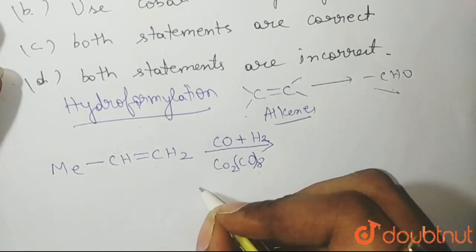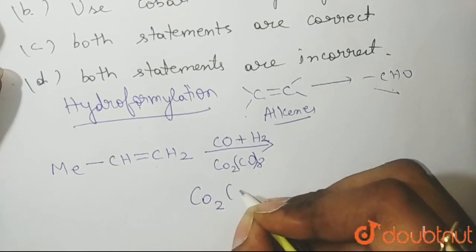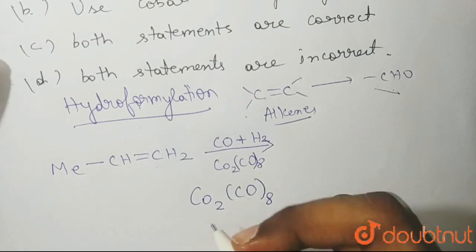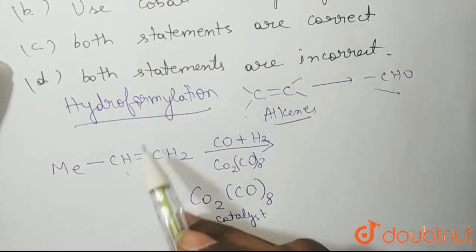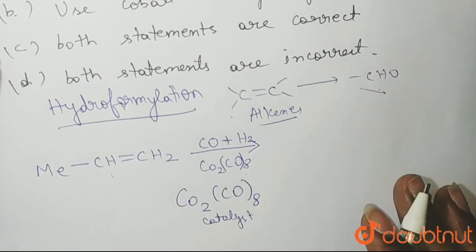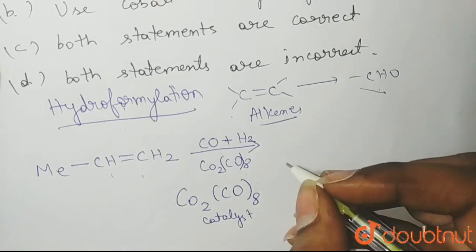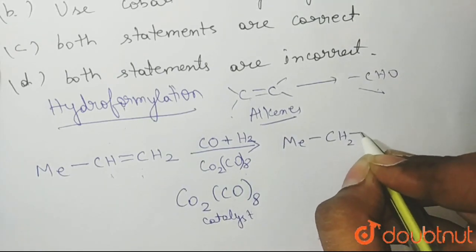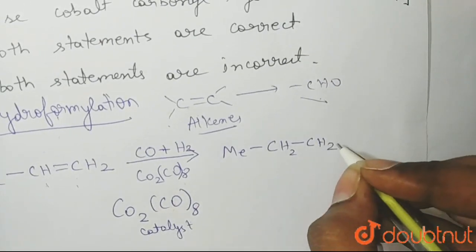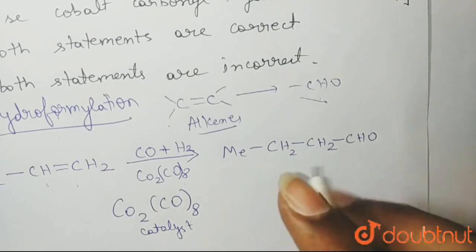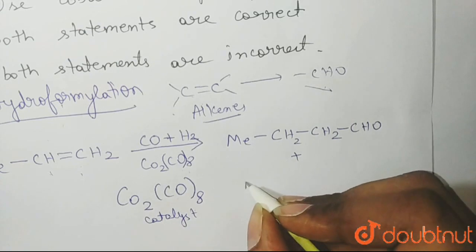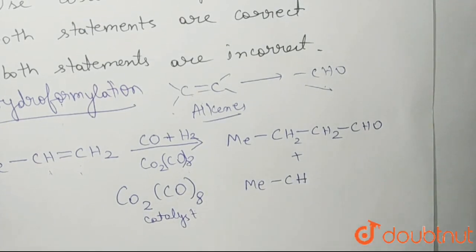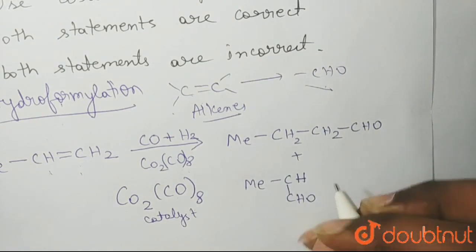Let me write this again. The catalyst is Co₂(CO)₈ — cobalt is present 2 times and there are 8 carbonyl CO groups, so it is octa-carbonyl dicobalt. This complex is used as a catalyst for the conversion of the alkene into an aldehyde, with an additional carbon. Here propene has 3 carbon atoms, and the product will have 4 carbon atoms.